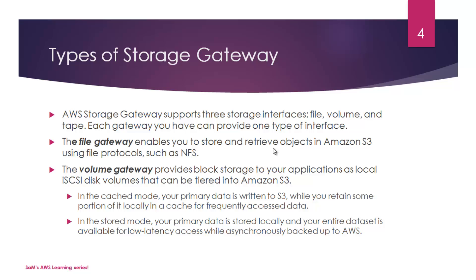In Cache mode, your primary data is stored in S3 while you retain some portions of it locally in a cache for frequently accessed data. The backup happens to S3, but a cache is maintained in the data center or within Storage Gateway for frequently accessed data.